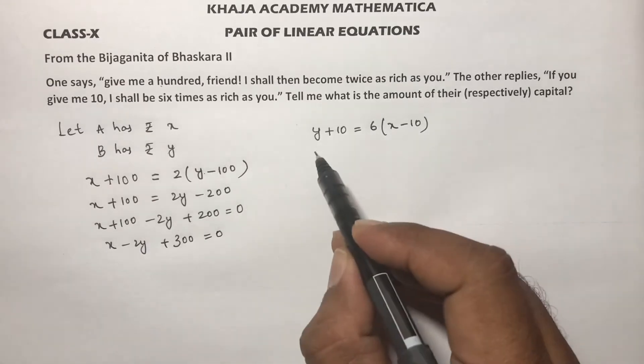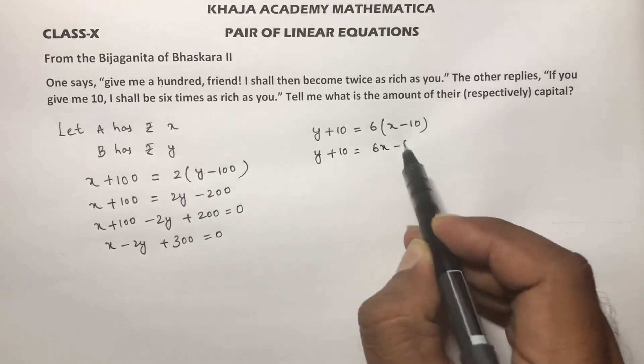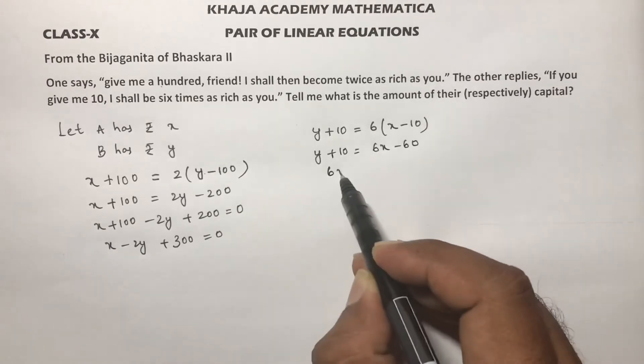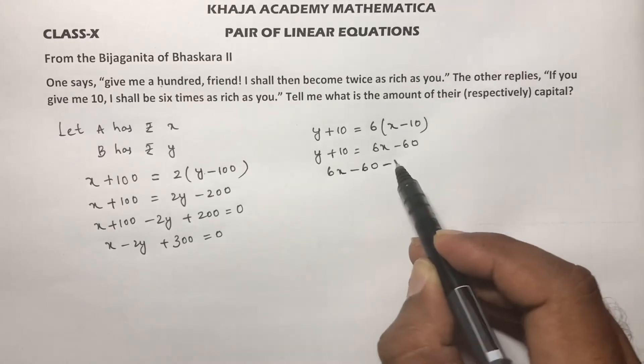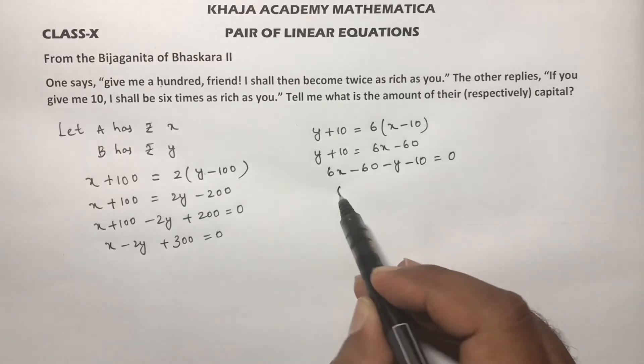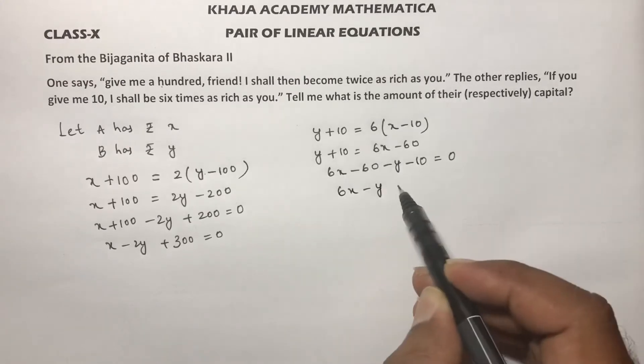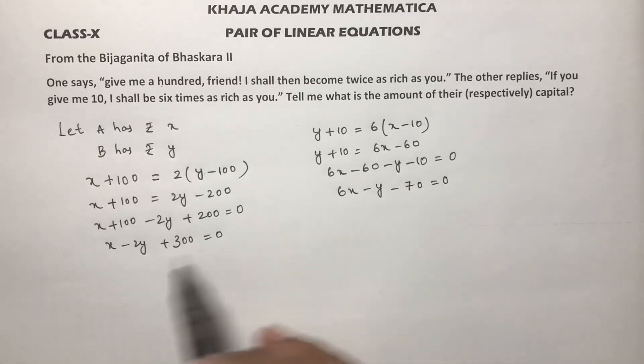So y plus 10 equals 6x minus 60. If these two values transpose, minus y minus 10 equals 0, so 6x minus y minus 70 equals 0.